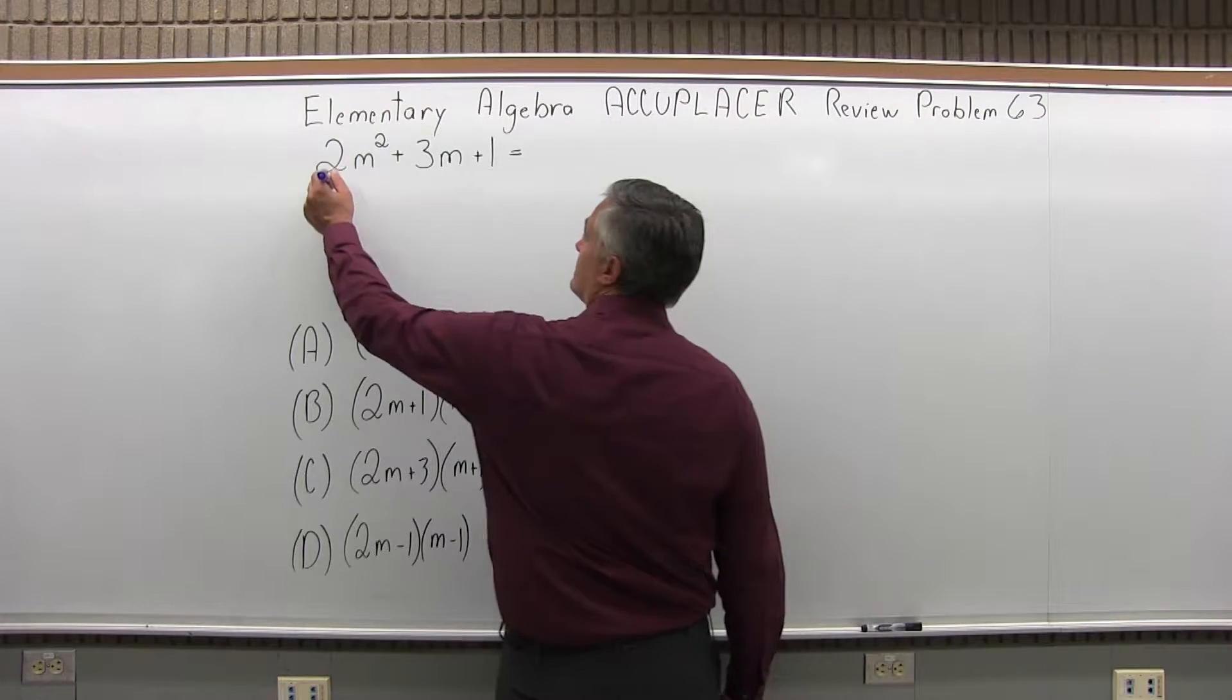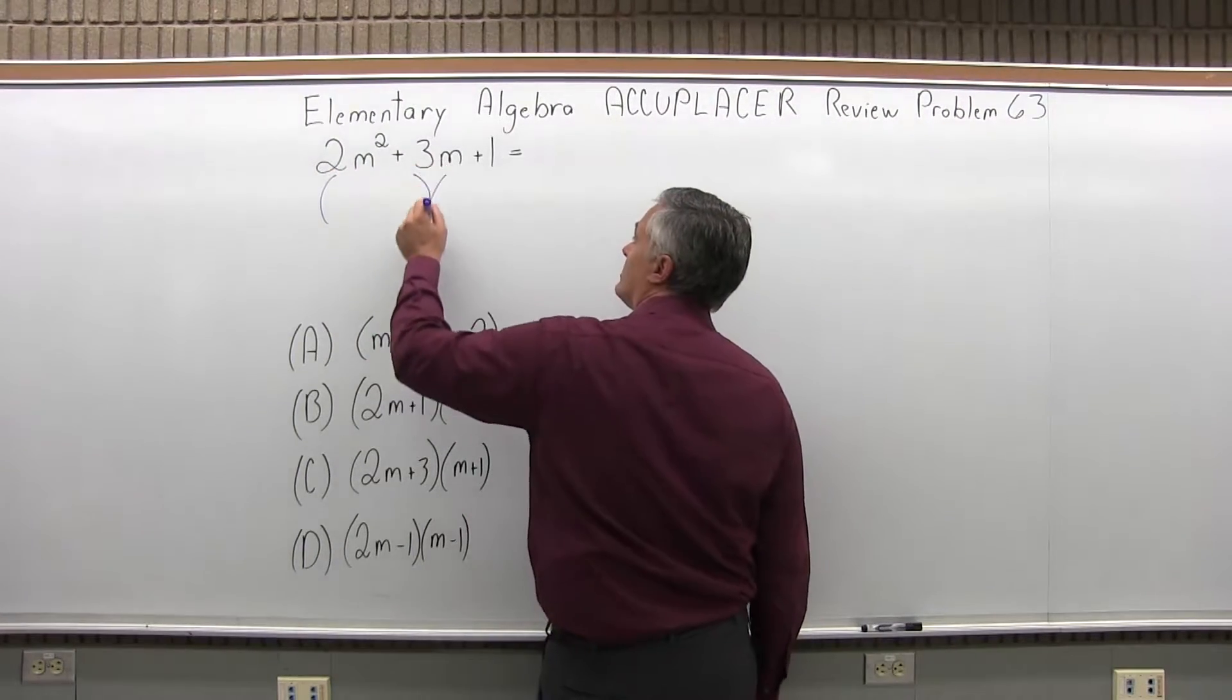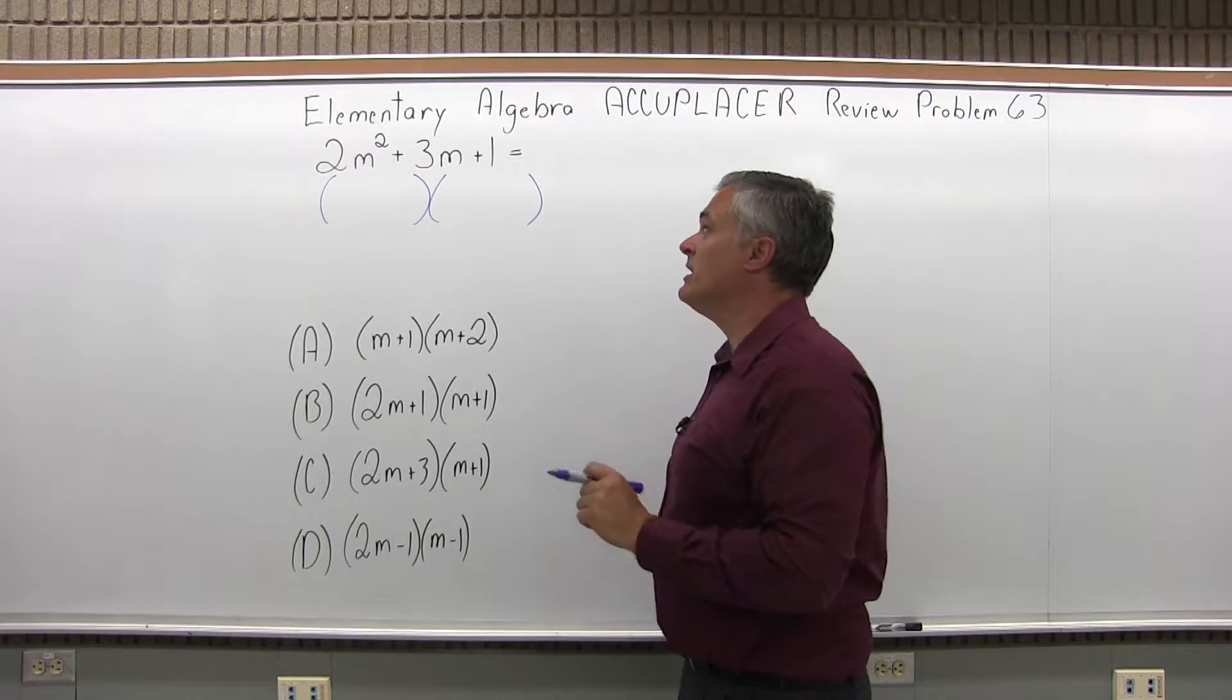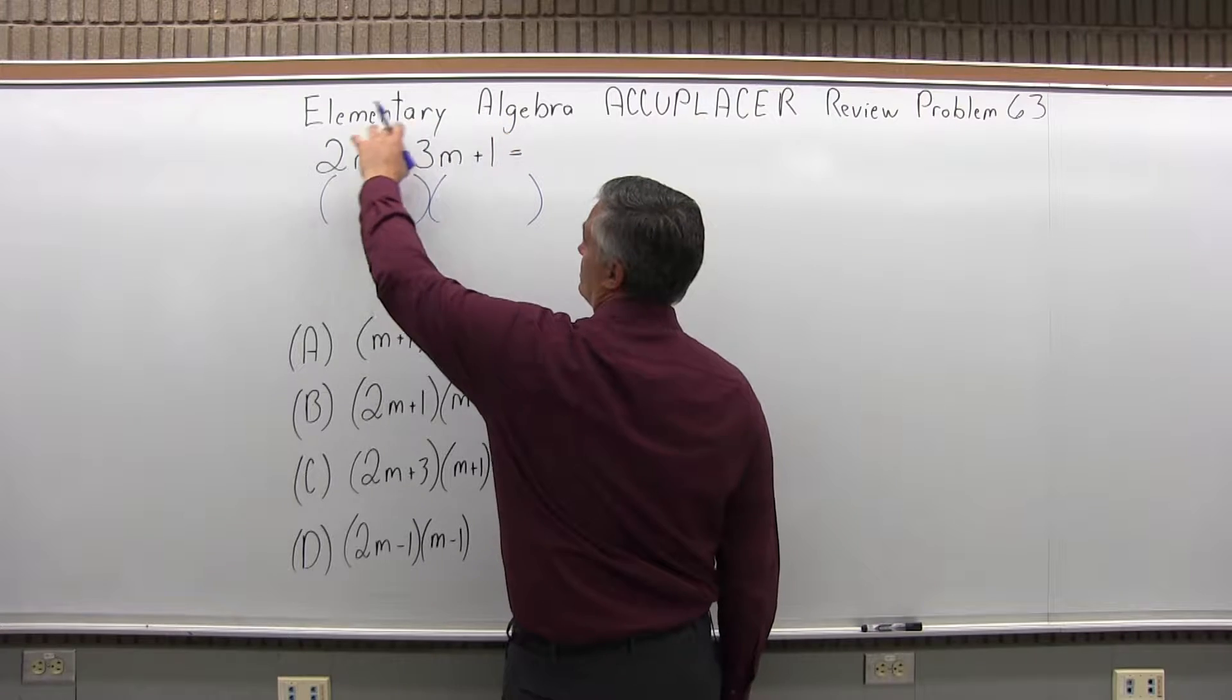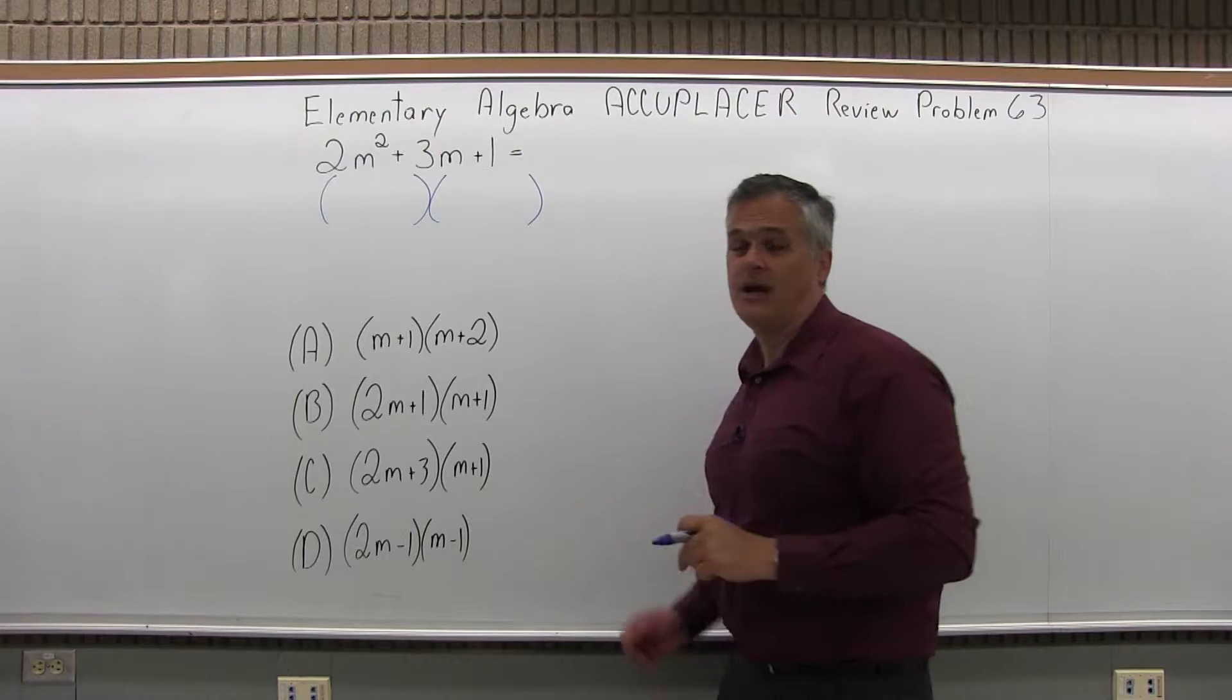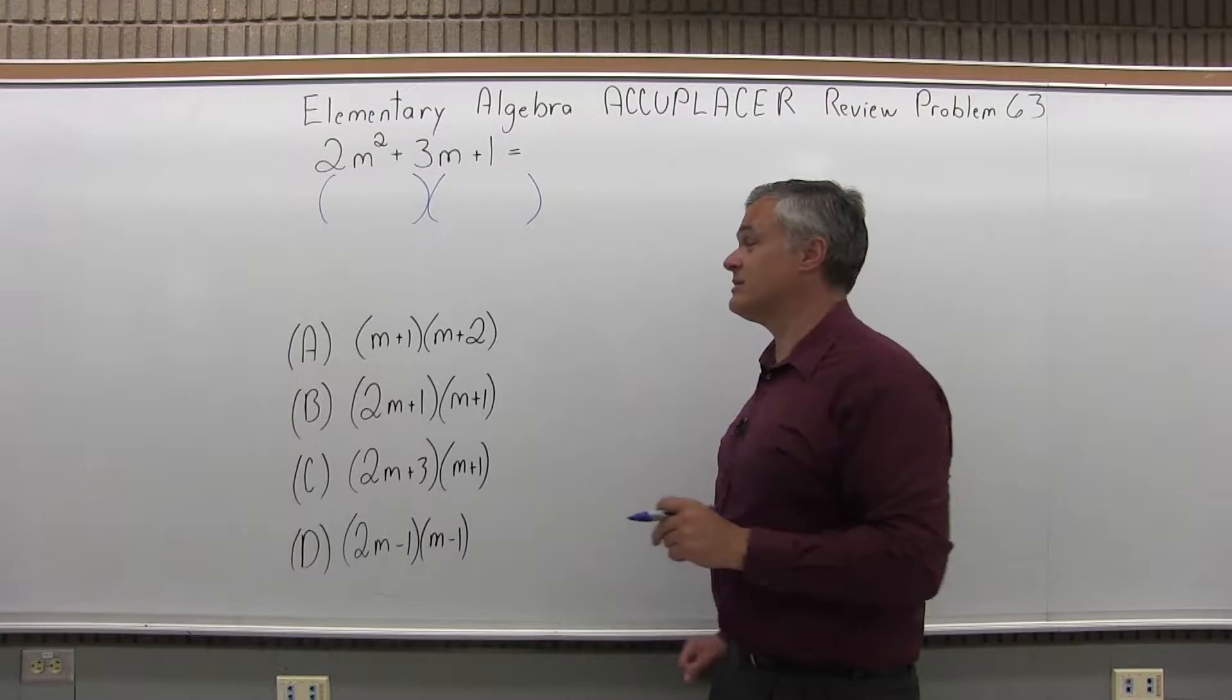What we need to do with this is factor it. Break it down into the two sets of parentheses that would multiply to give you back the original problem. Before I even start making the parentheses, you should see if there's something you could factor out of each piece. In this case there isn't, but that's a good thing to check first.